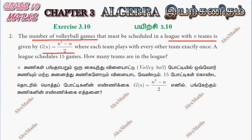So this is the number of volleyball games, where each team plays with every other team exactly once. The league schedules 15 games total, so the number of games in the function is equal to 15. The question asks: how many teams are in the league?